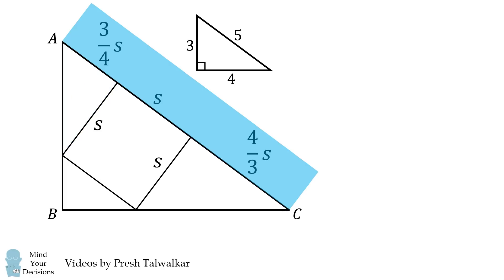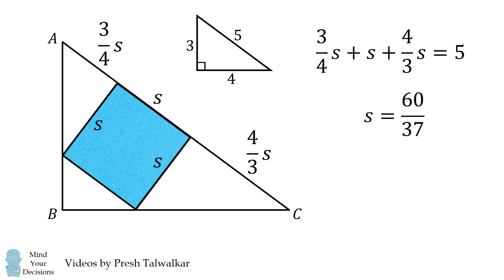We now have the sum of these distances will be equal to the length of the hypotenuse. We can then solve this equation for S and we get that S is equal to 60 over 37. To get the area of the square we will square the value of S and we get 3600 over 1369 which is approximately equal to 2.63. And that's our answer.